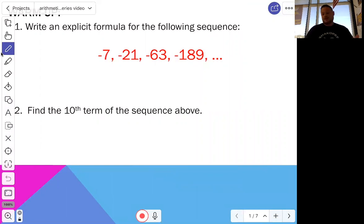In this warm-up, we want to write an explicit formula for the following sequence. The first thing you want to do here is check, is this geometric or is it arithmetic? Remember, if it's arithmetic, we're adding or subtracting by the same amount every time. If it's geometric, we're multiplying by the same amount every time. Looks like to me on this one, looks like we're multiplying by three every single time.